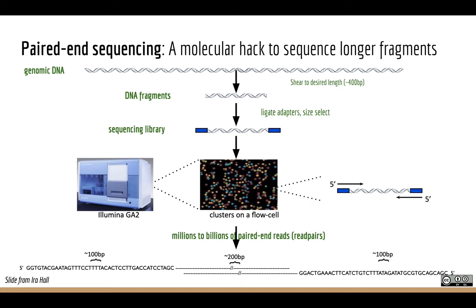An important advance was paired-end sequencing. Because human genomes are highly repetitive, short sequences off these machines are often much smaller than the typical repeat size — like a jigsaw puzzle where your piece is smaller than a repeated element. If the DNA sequence is larger than the typical repeat size, you get flanking information to help place it. But we can't sequence thousand base pair molecules, only about 150 bp.